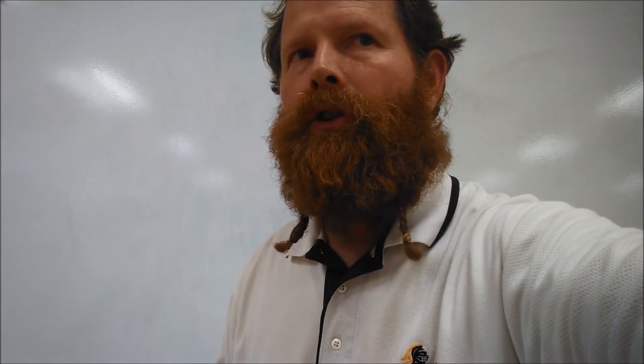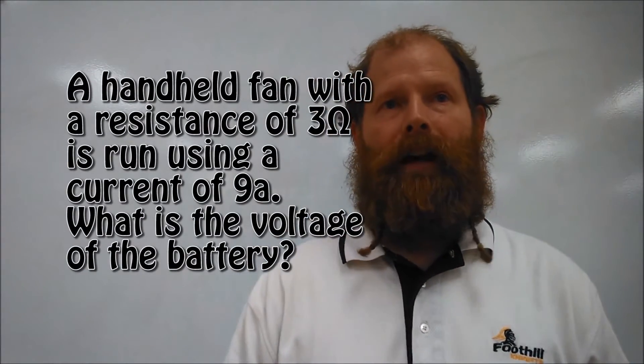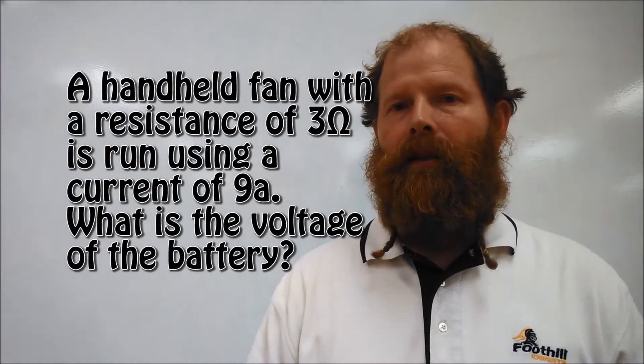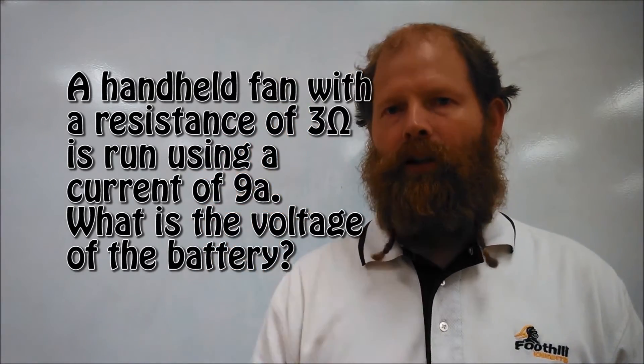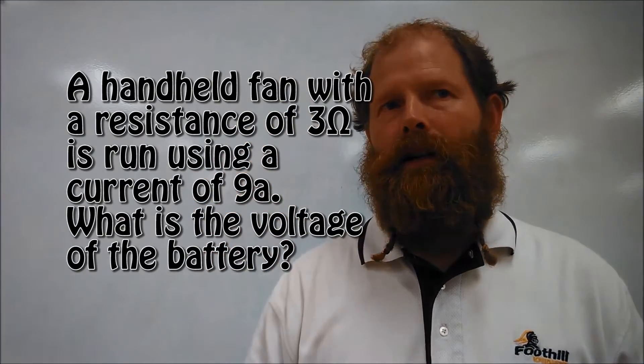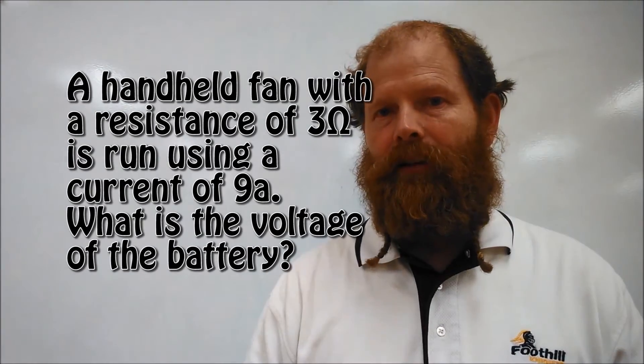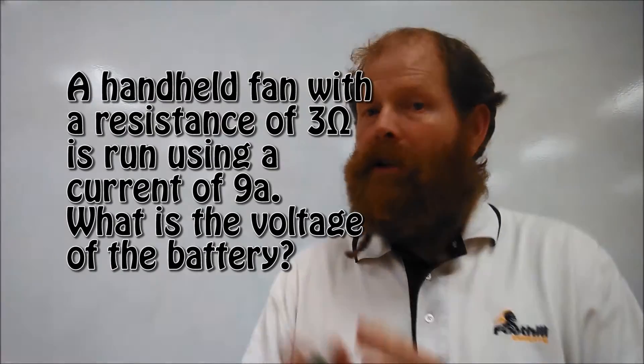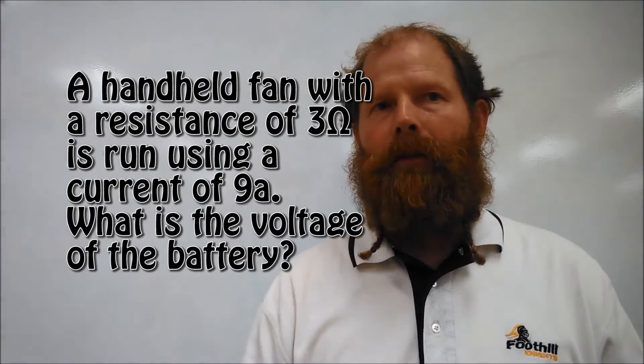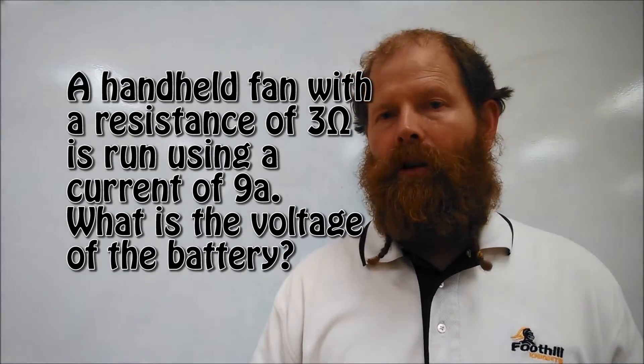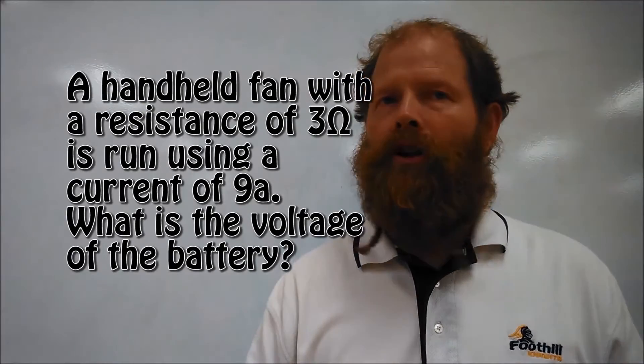First sample problem we'll do is a handheld fan with a resistance of three, and then you'll notice that little horseshoe symbol there, is run using a current of 9A. For now we're not going to worry about the units because once again we haven't learned all of them. The question is, what is the voltage of the battery?